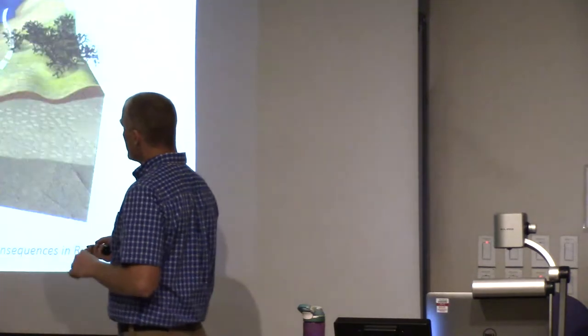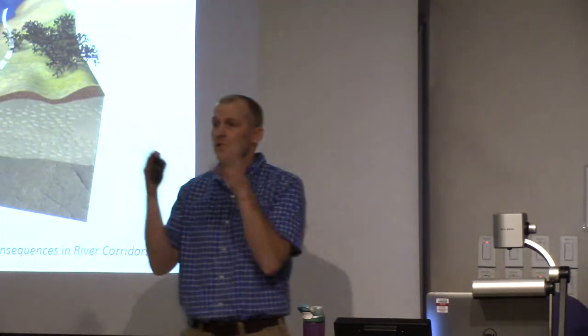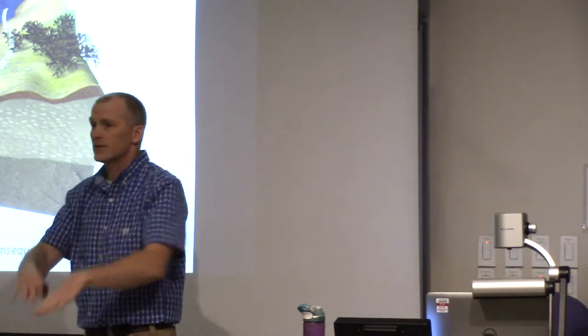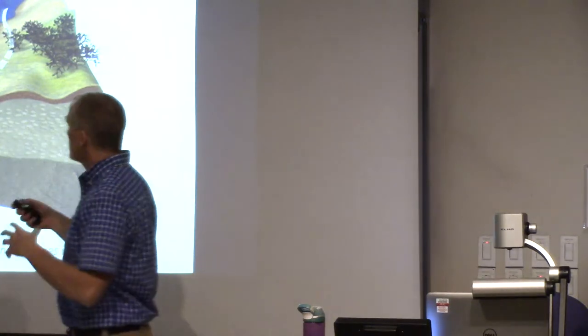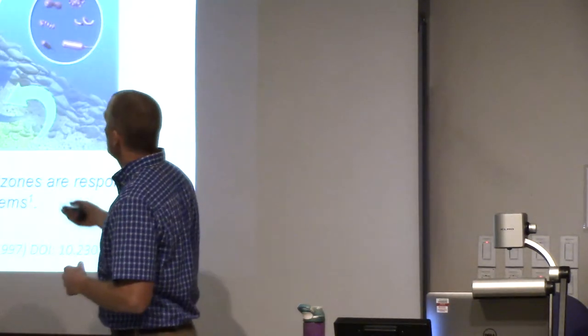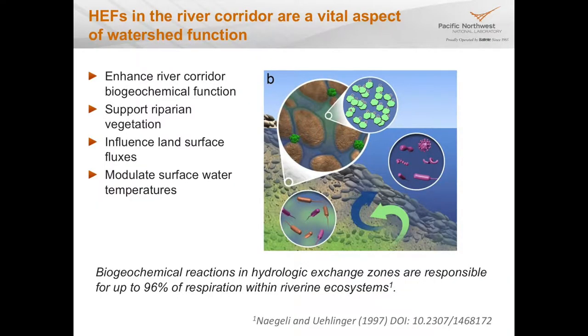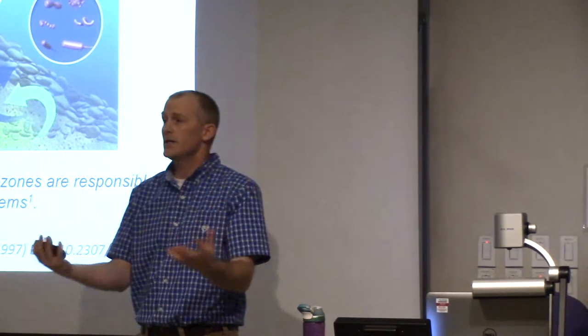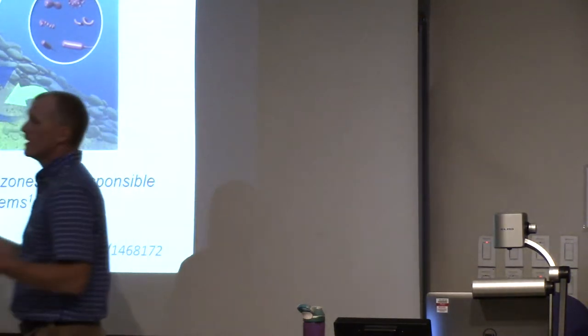We focus on hydrologic exchange flows in the context of river corridors and watersheds. When water moving down a river hits an island, part of it goes under through the subsurface sediments and emerges downstream — exchanging from surface through subsurface and back out. These exchange flows are a really important part of river corridor function: they enhance biogeochemical function, support riparian vegetation, influence greenhouse gas emissions, modulate surface water temperatures important for fish, and can contribute up to 96% of the respiration and biogeochemical activity within river ecosystems.